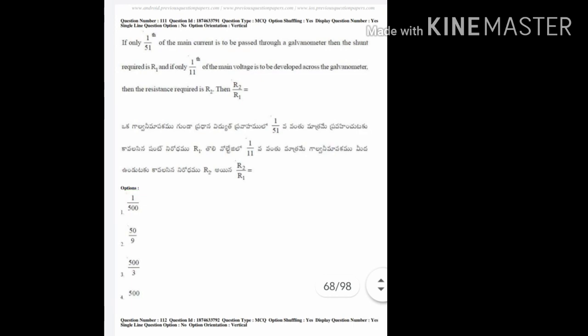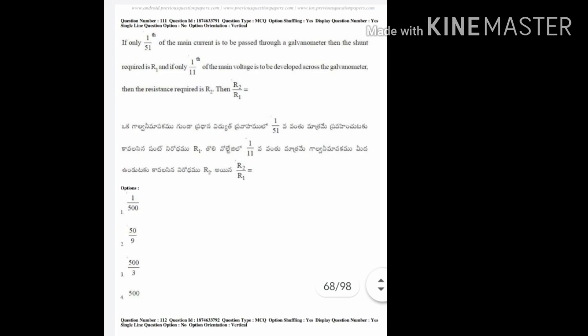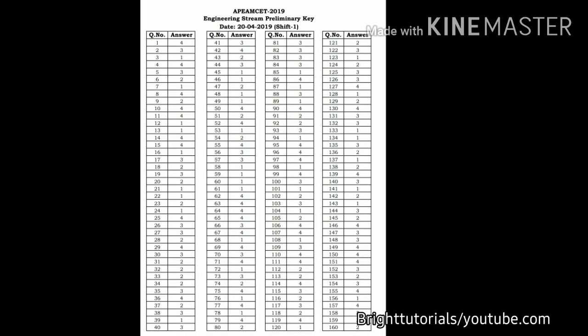In this question, you can see that option one and option four are opposite to each other — if you take the reciprocal of option one, you get option four. So you can choose any one option between one and four. The correct answer here is option number four. This is the answer key of the APM 2019 paper — if you have any doubt you can check this answer key.